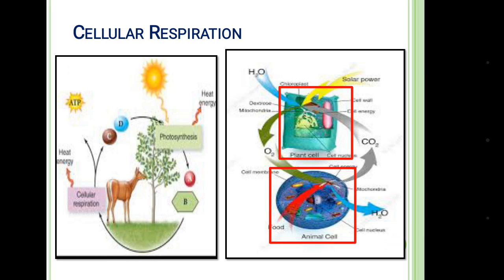So the energy which they are getting from the sun — the plants and then the consumers — they are not transferring the total energy to the next level, as they are utilizing some of the energy. Some heat energy is released from the plants and some from the consumers.